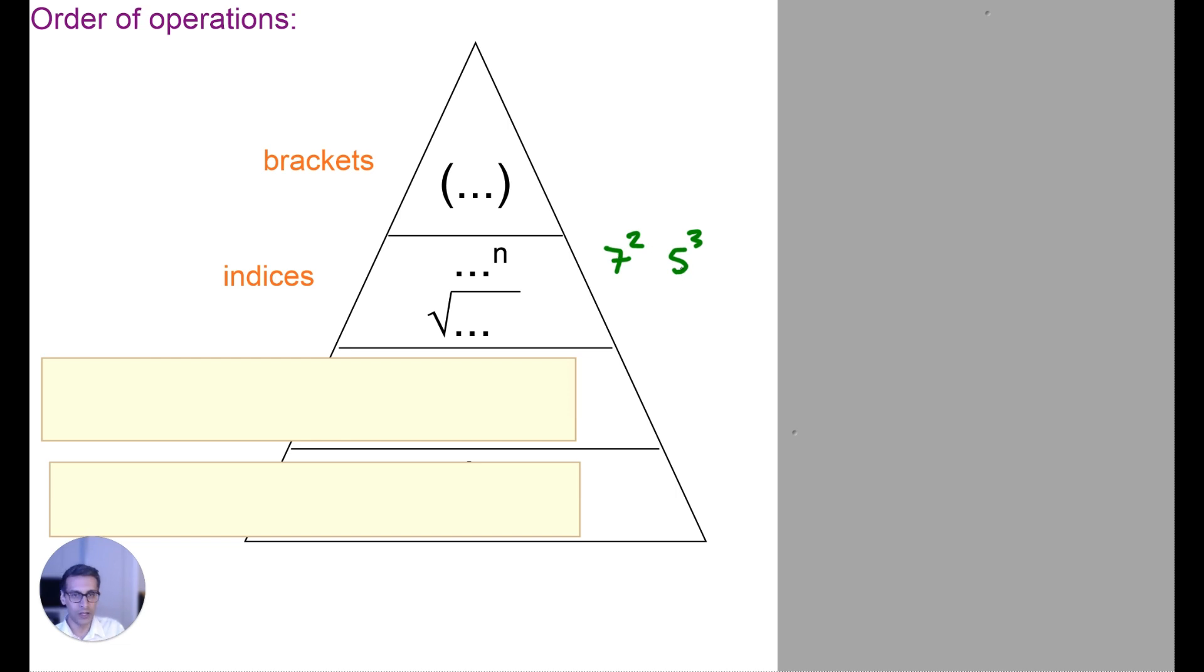square root of 36, for example, you would need to work that out first. So brackets first, then indices, which includes things like square roots. And later on when you do thirds you're going to come across this in a bit more detail.